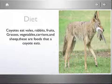Coyotes eat voles, rabbits, fruits, grasses, vegetables, carrion, and sheep. These are foods that a coyote eats.